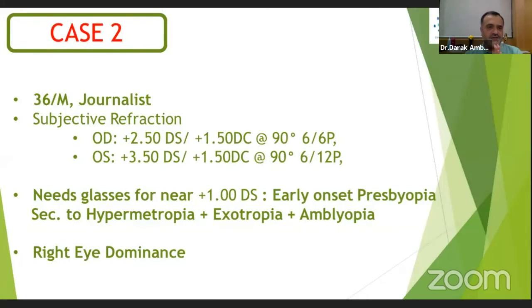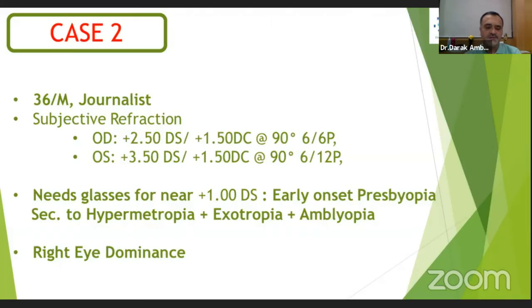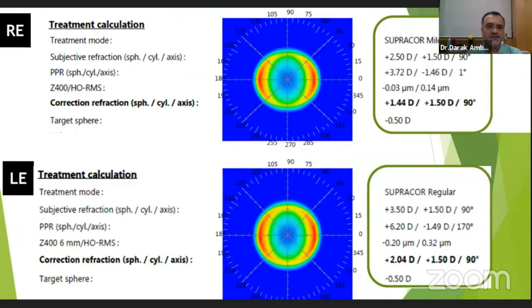The second case is a journalist with a subjective refraction of minus 2.5 and minus 3.5 diopters, taking an addition of 1.5 at 90 — hyperopic, using glasses for near, with early onset presbyopia. Both patients were treated with bilateral SupraCore using SupraCore major and minor. The non-dominant eye was corrected for plus 2 diopters and the dominant eye for 1.5 diopters. This is the treatment calculation.